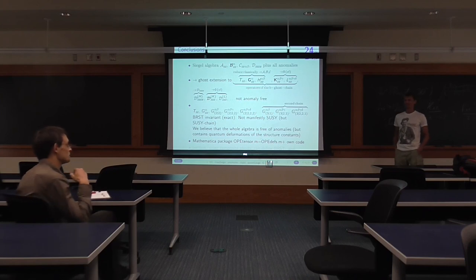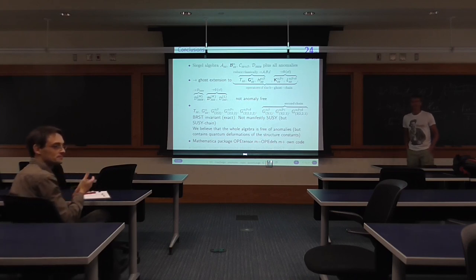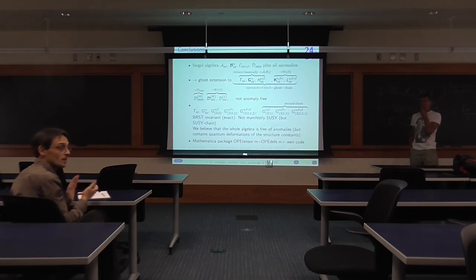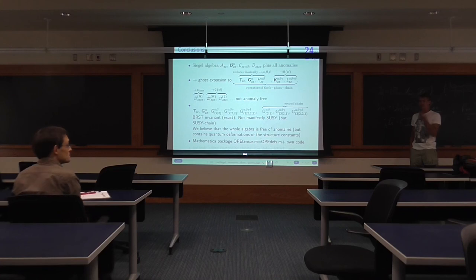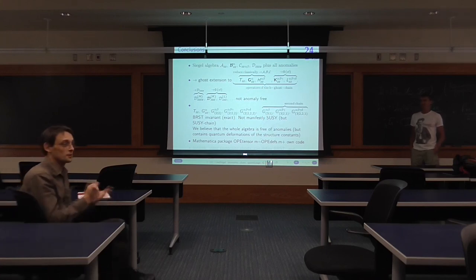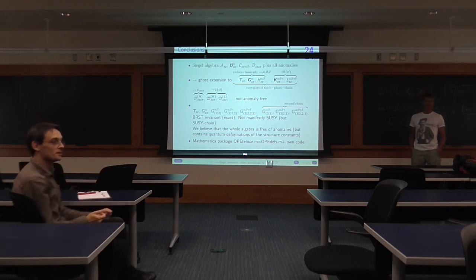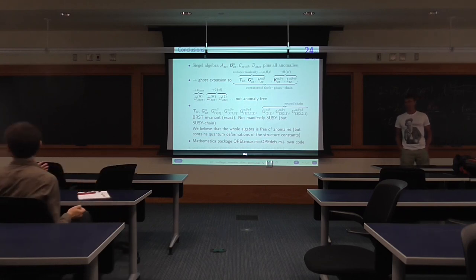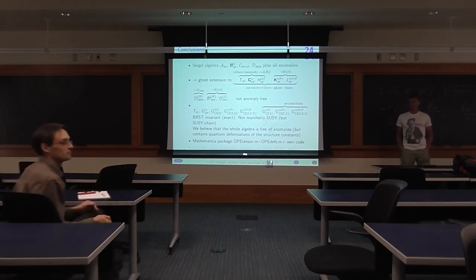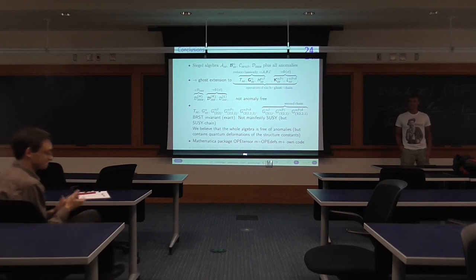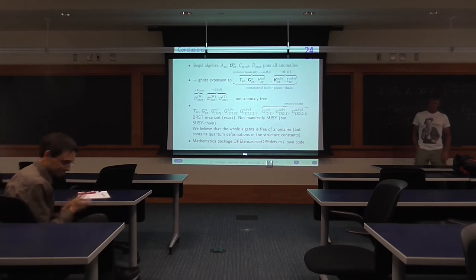So, to summarize: I've showed you the Siegel algebra and the ghost extension into these Berkovits B-ghost chain things, which were not anomaly-free. And then I did the BRST-invariant redefinition, and there we didn't discover any anomalies — at least between those operators that contain a classical ghost-free part. And we believe that the whole algebra is free of anomalies. I plan to make a Mathematica package out of all this. Alright, thank you. Sorry for the overtime. I suggest unless there is a very pressing question, that we just talk to Sebastian because he's right here. Let's thank him again.